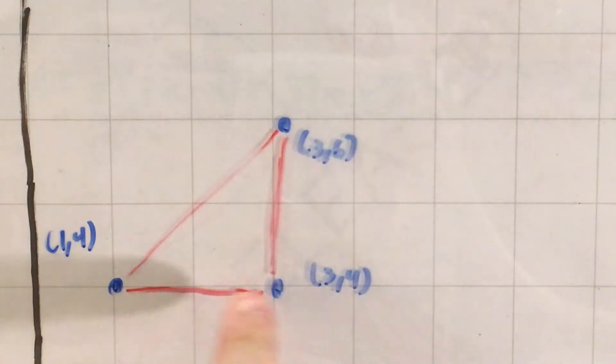But for now, I'm going to get out my graph, which actually has the vertices of this triangle already graphed on it. So here's my triangle. I have my three vertices: (1, 4), (3, 4), and (3, 6).